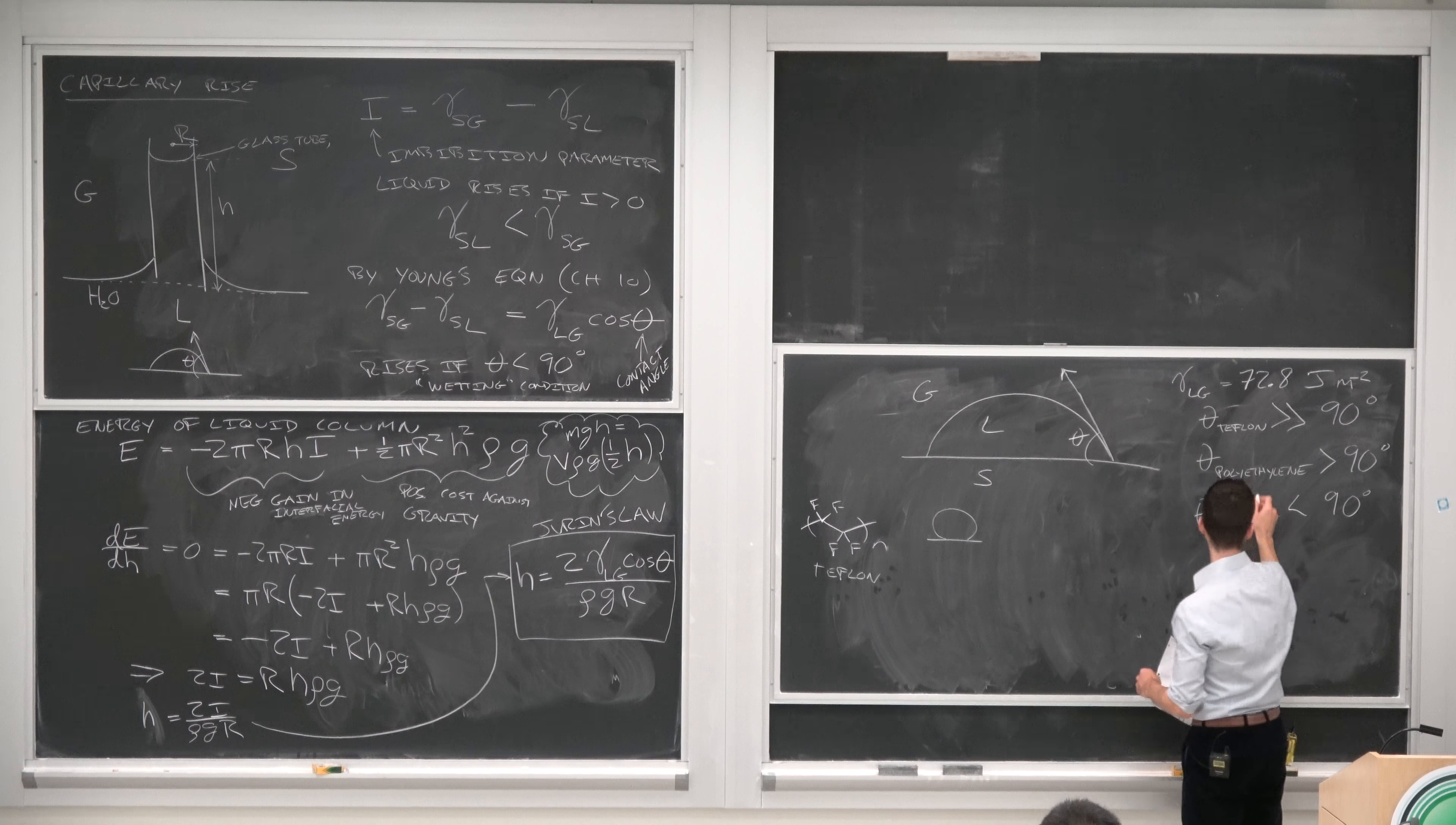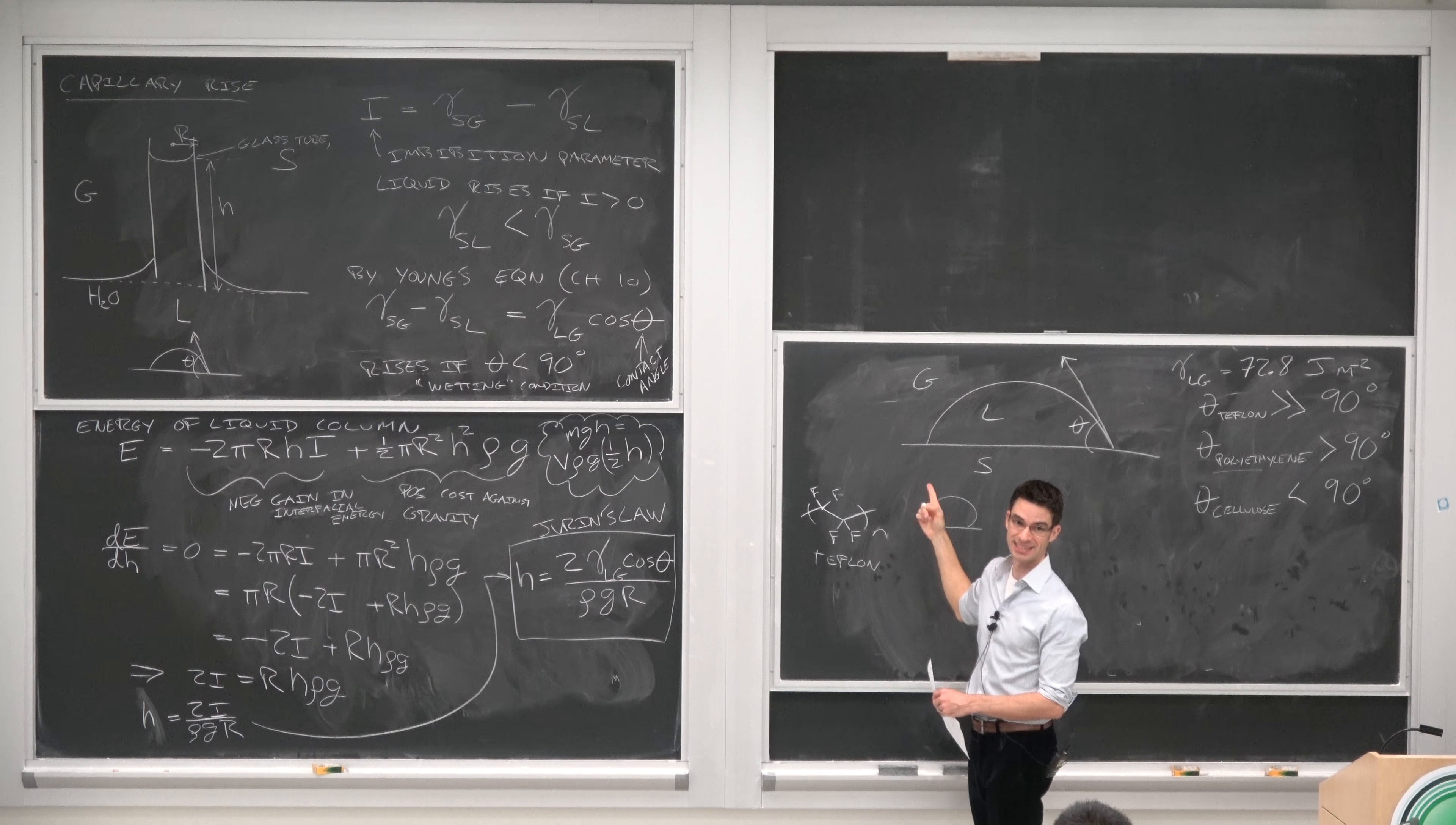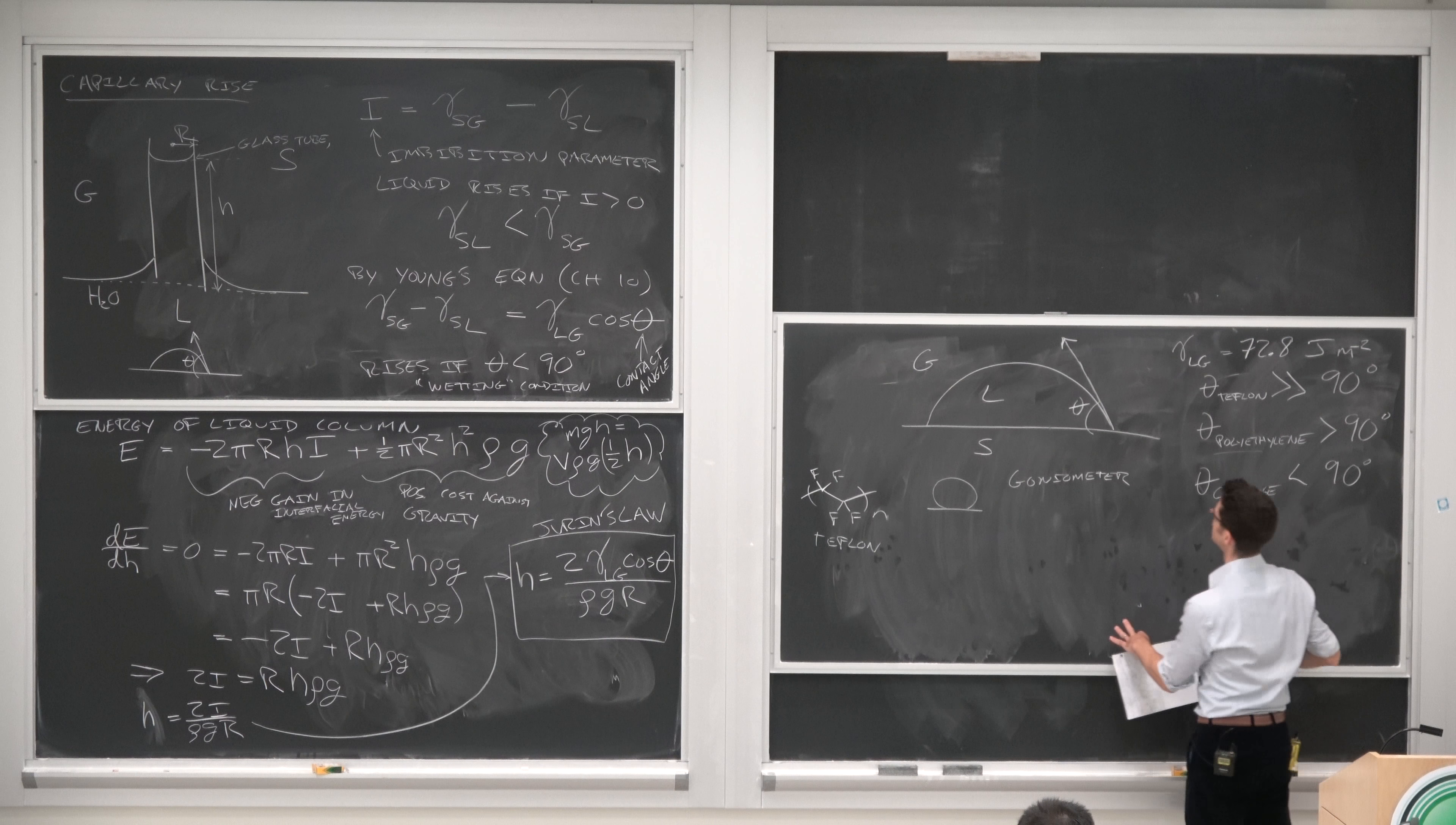So suppose we measured this. We got our protractor out and we measured it. Now, if you're doing this in a lab, the instrument used to measure a contact angle is called a contact angle goniometer. Seriously.